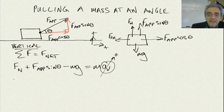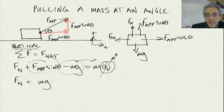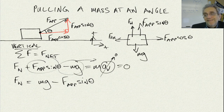Let us solve for the normal force. The normal force equals mg minus F applied sine theta. Taking the other terms to the other side, the whole M times A vertical term was zero. So we now have an equation for the normal force.